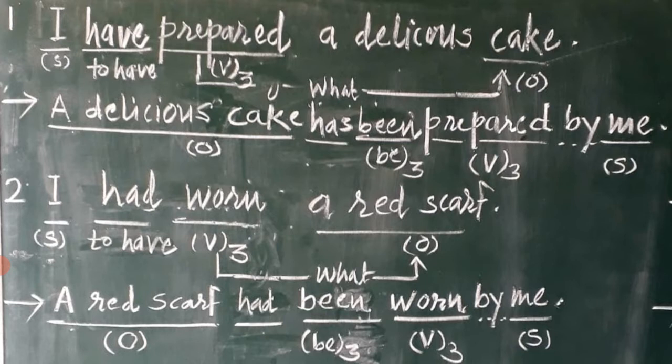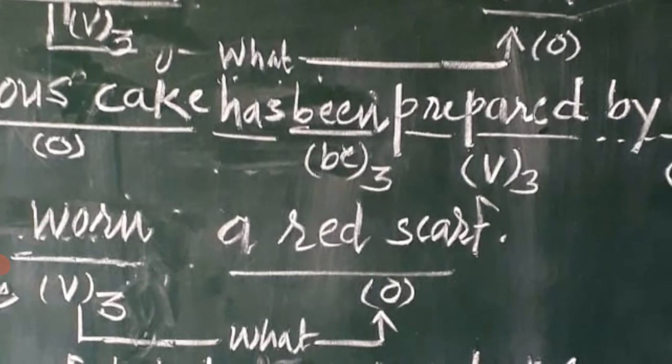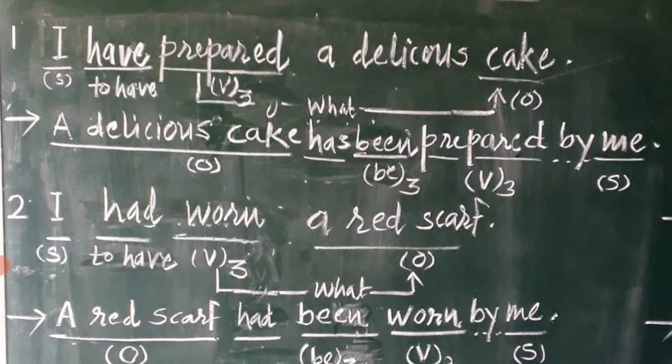As we know, an object is placed in place of subject. So 'a delicious cake' is put in place of 'I.' Afterwards, keeping its tense form as well as the object's singular or plural form in view, out of 'have' and 'has,' 'has' has been chosen. Later on, 'be' is converted into its past participle form 'been,' because in perfect tense the action verb already remains in past participle form.